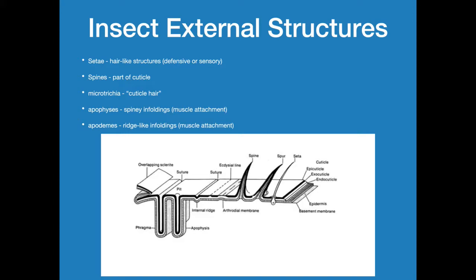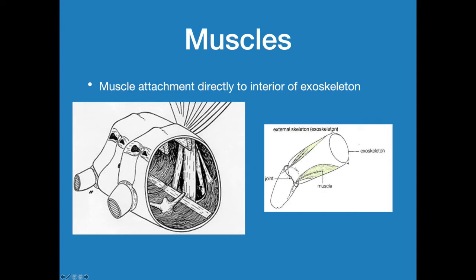Other external structures include spines, setae, microtrichia — which are hair-like structures made out of cuticle — apophyses, and epidemes. Apophyses are spiny enfoldings and epidemes are rigid-like enfoldings. Usually muscles are attached to these areas. You can see an apophysis right here. These structures are used mainly for some type of muscle attachment. Since insects have no internal skeleton, they only have an exoskeleton, so muscle attachment will be to the exoskeleton.